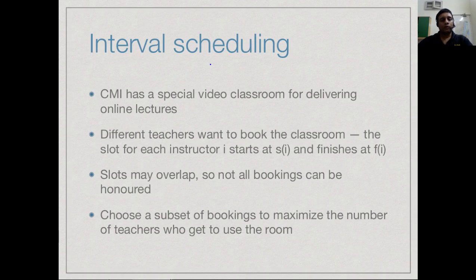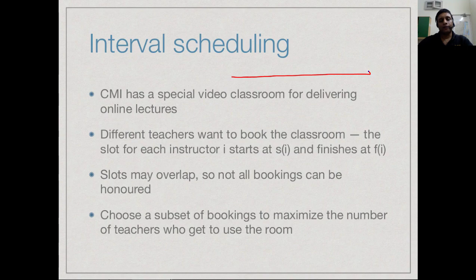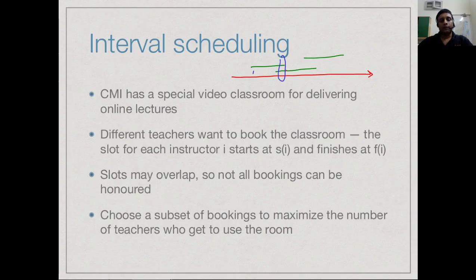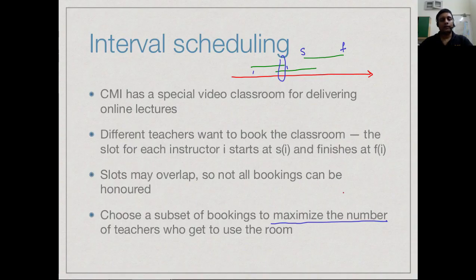Let us look at a problem we have seen before in the context of greedy algorithms: interval scheduling. Interval scheduling involves a resource available over a period of time, and people make bookings for it — overlapping bookings cannot both be granted. We are given a set of requests each with a starting time and an ending time, and we want to decide which requests to allocate so that the maximum number of bookings are granted. The goal is to maximize the number of bookings, not the length.